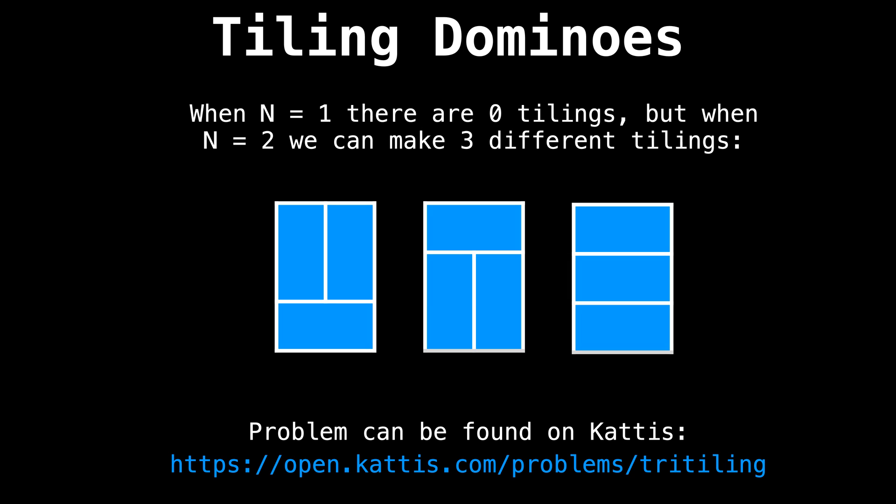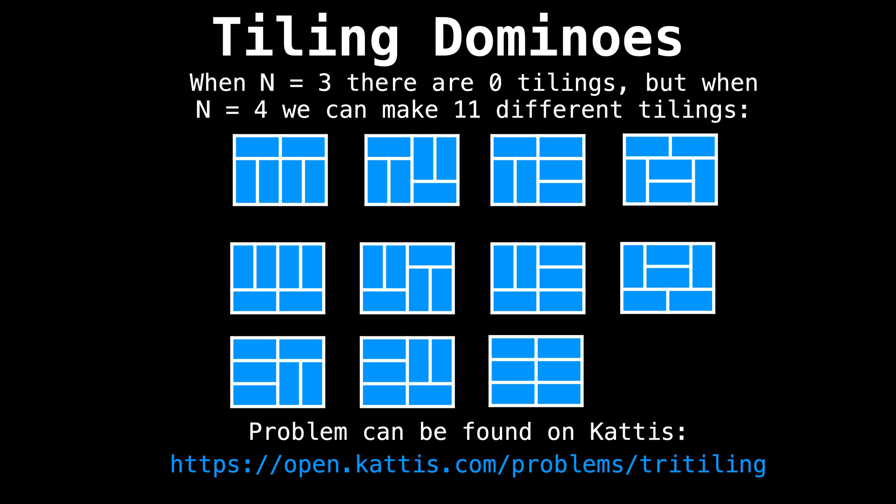Let's look at some solutions for low values of n. When n equals one, meaning there is one column, no tilings are possible because we cannot fill the grid using only two by one dominoes. But when n equals two, there are a total of three possible tilings shown on the slide. When n equals three, we see that there are again zero possible tilings. In fact, you quickly realize that it is never possible to tile a board when n is odd, since there's always going to be a gap you can't fill with the dominoes.